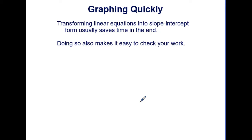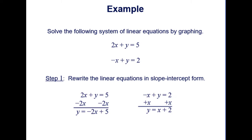When you're trying to solve systems to graph quickly, you usually want to transform your linear equations into slope-intercept form, as it usually saves time in the end. Doing so also makes it easy to check your work. Let's look at some examples where this happens.